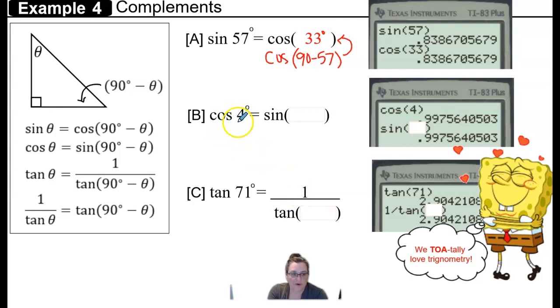The cosine of 4 degrees is going to be equal to the sine of its complement, and that would be 90 minus 4, which is 86. So the cosine of 4 is equal to the sine of 86 degrees. When we verify that in the calculator, we see that they are equivalent.